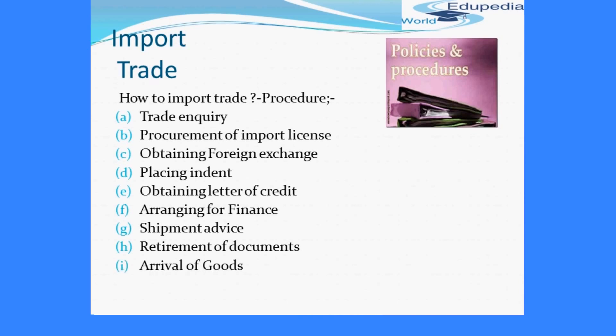The next point is arrival of goods. When the goods arrive in the importer's country, the person in charge of the carrier — either ship or airways — informs the officer in charge at the dock or airport about the arrival of goods. They provide a document known as the Import General Manifest, which contains the details of the imported goods. On the basis of this document, goods are unloaded from the carrier.